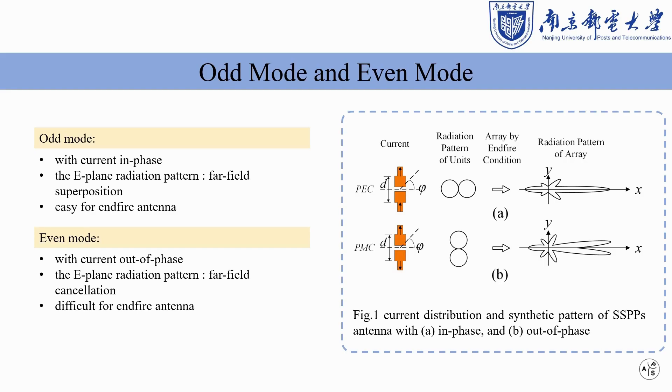On the contrary, the electric fields of the even-mode SSPPs elements cancel out in the x-axis direction, and the array formed by them will have zero points in the endfire direction, which is not conducive to the realization of endfire radiation.